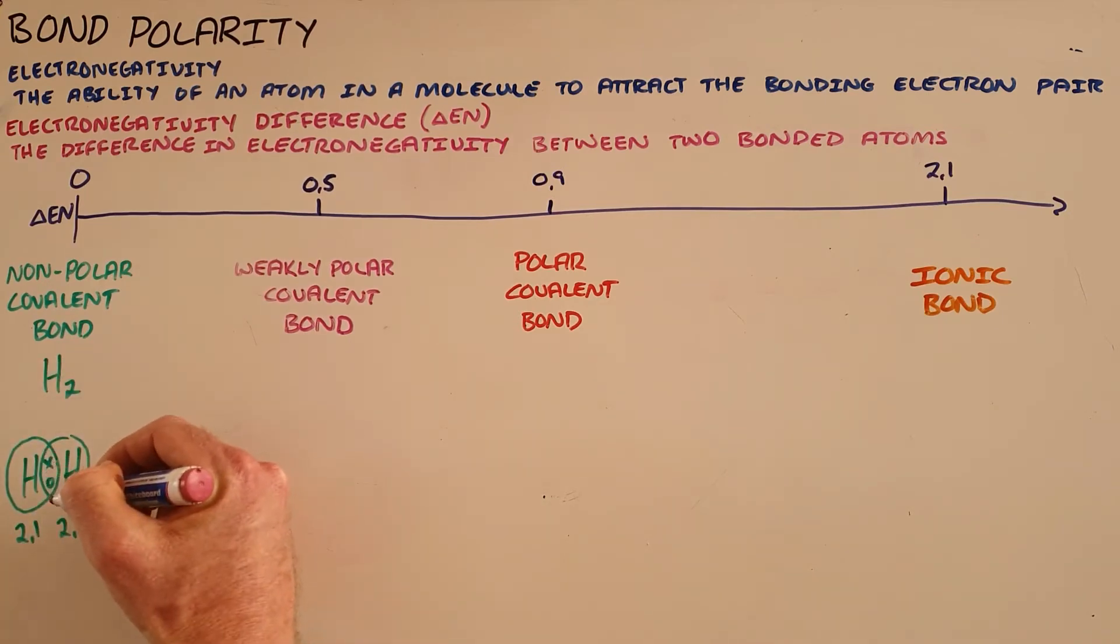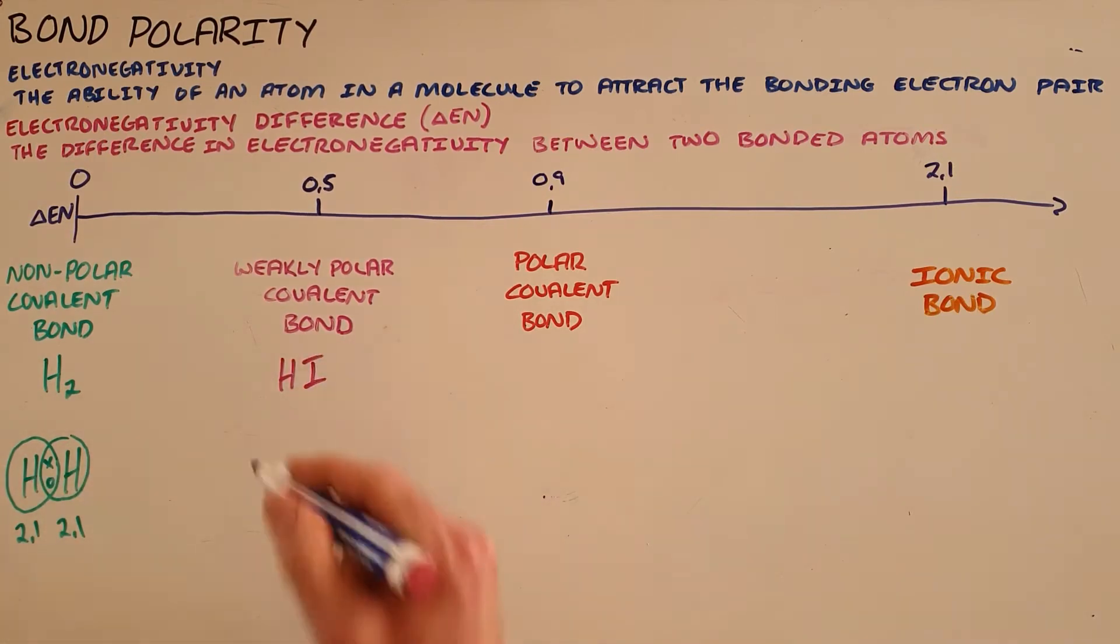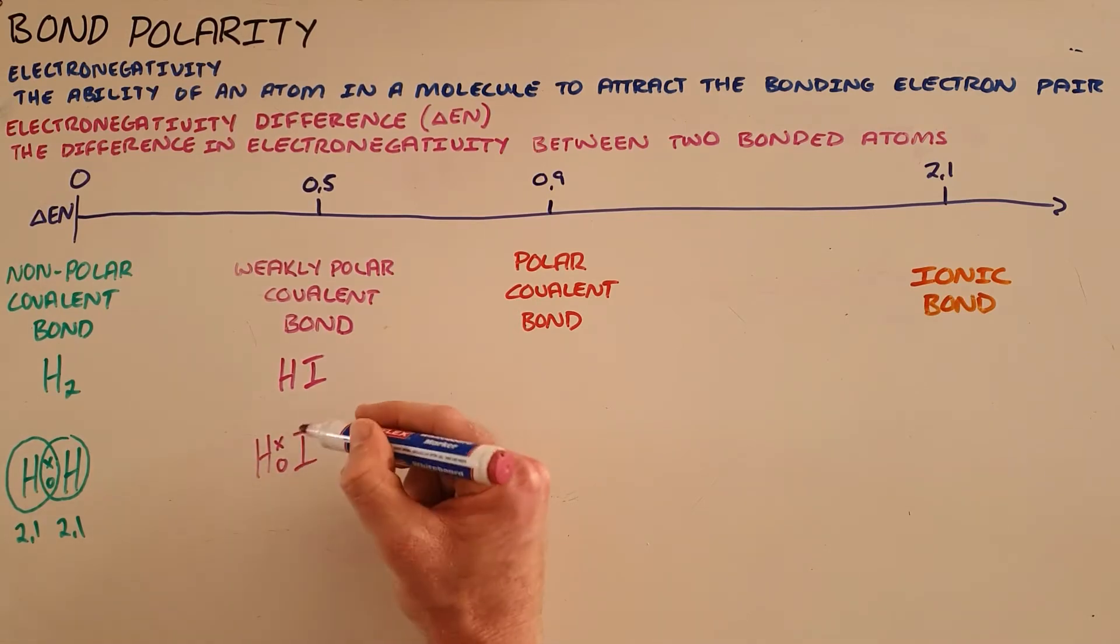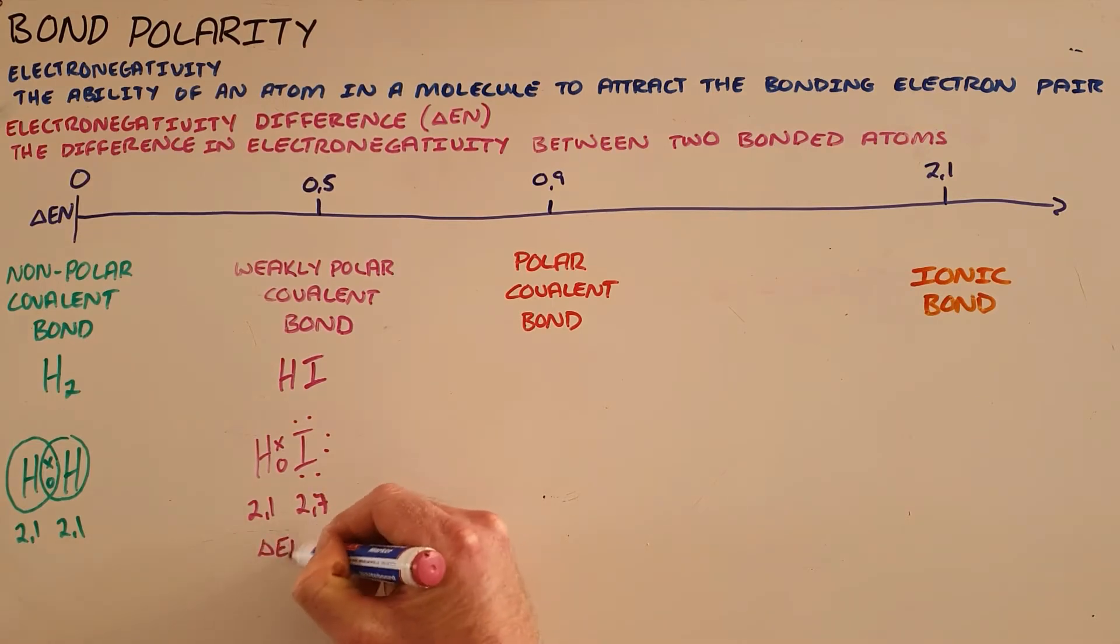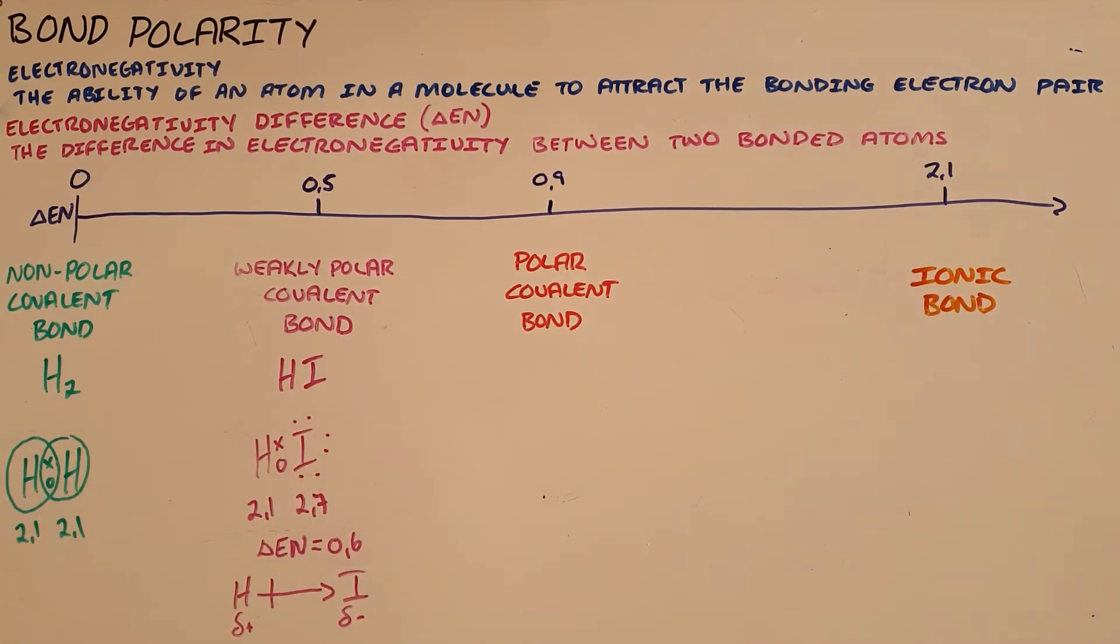We can see an example of a weakly polar covalent bond with hydrogen iodide, where the bond is formed by hydrogen and iodine each sharing a single electron. The difference now is that hydrogen still has an electronegativity of 2.1, but iodine has an electronegativity of 2.7. What this tells us is that the bonding electron pair would reside slightly closer to the iodine atom than to the hydrogen atom, which makes this iodine atom slightly negative and the hydrogen slightly positive, which creates a weak dipole. We say that this is a weakly polar covalent bond.